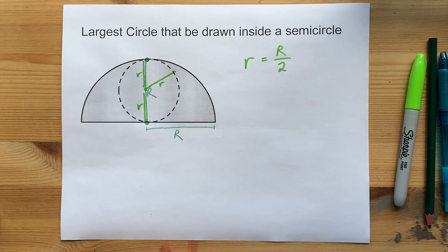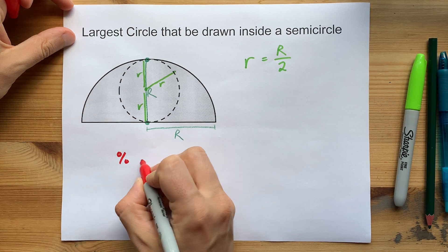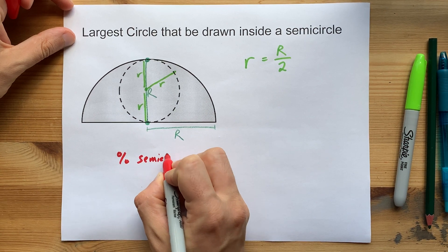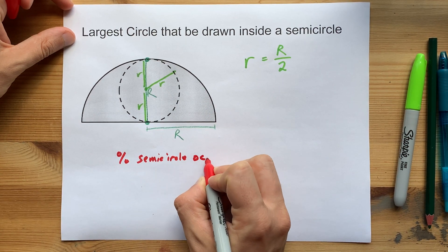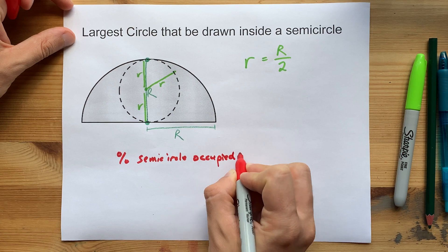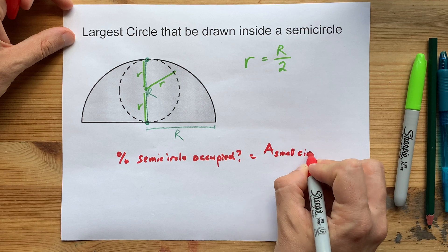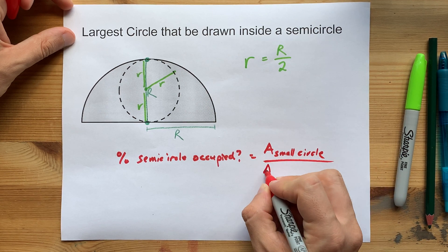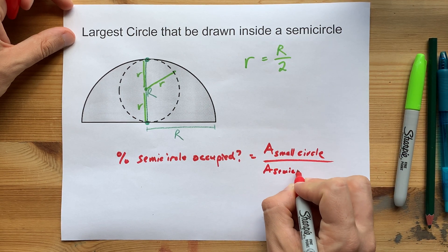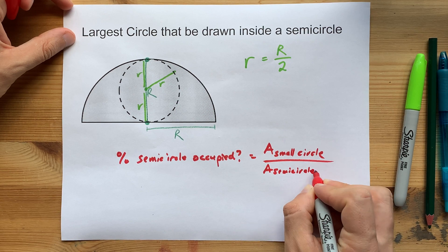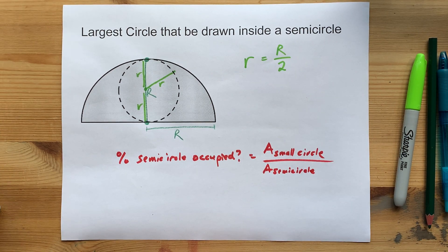Now, you might be curious about what percent of the semicircle is occupied. You're going to need to calculate the area of the small whole circle and divide it by the area of the semicircle to get a fraction or decimal.